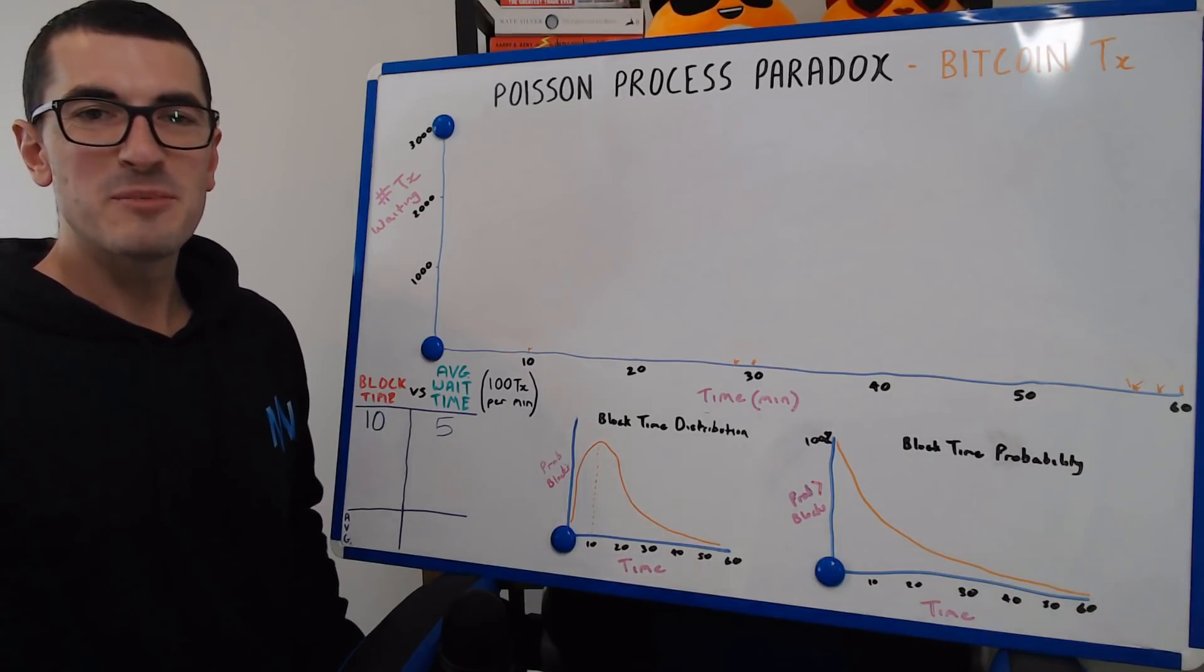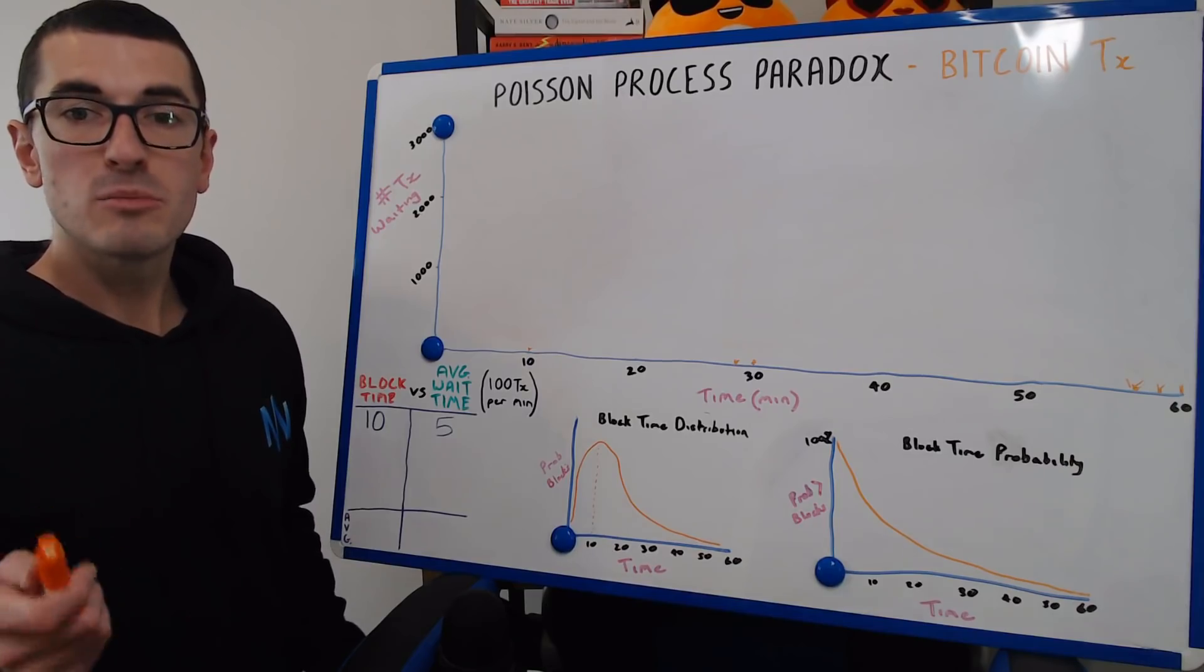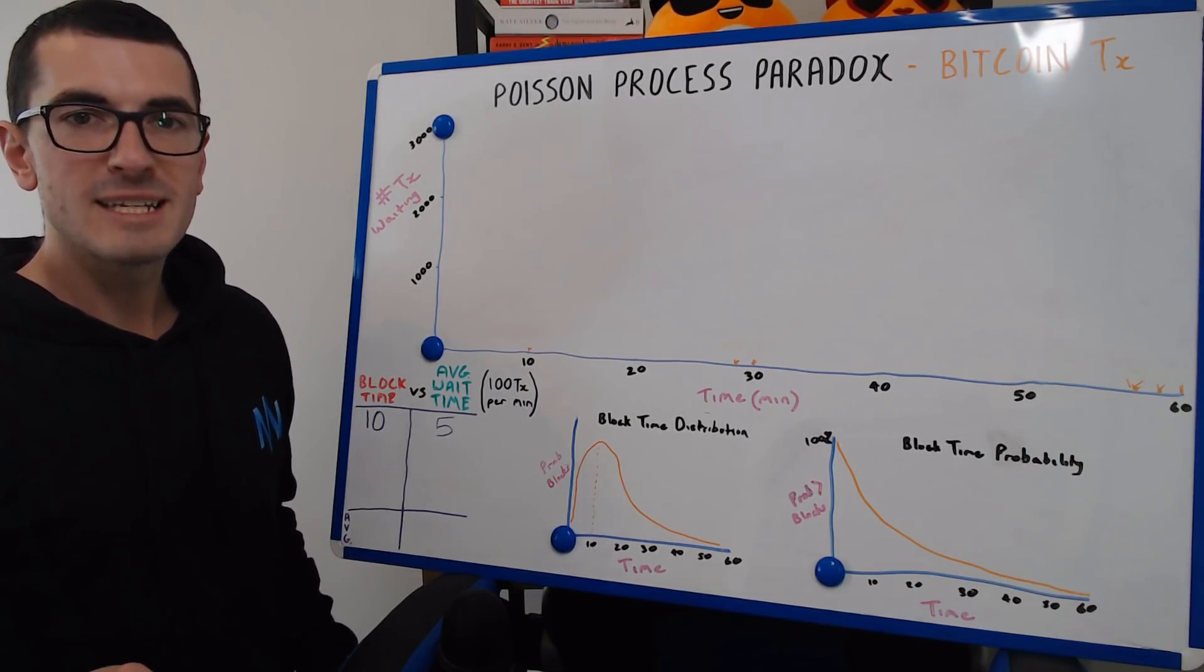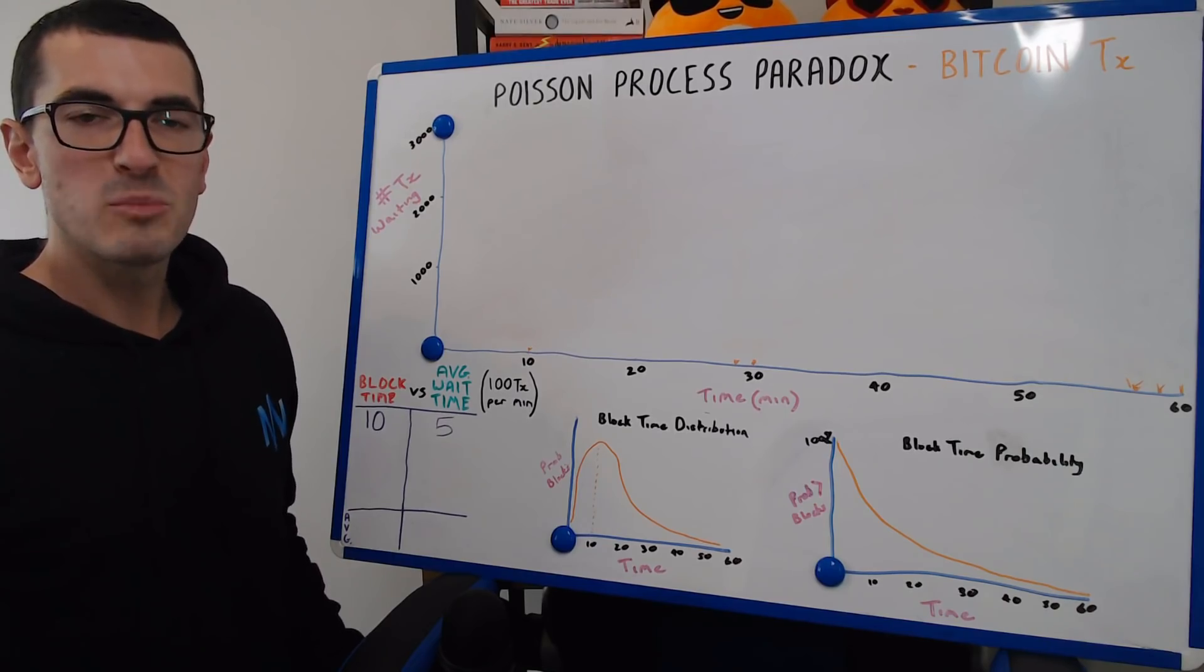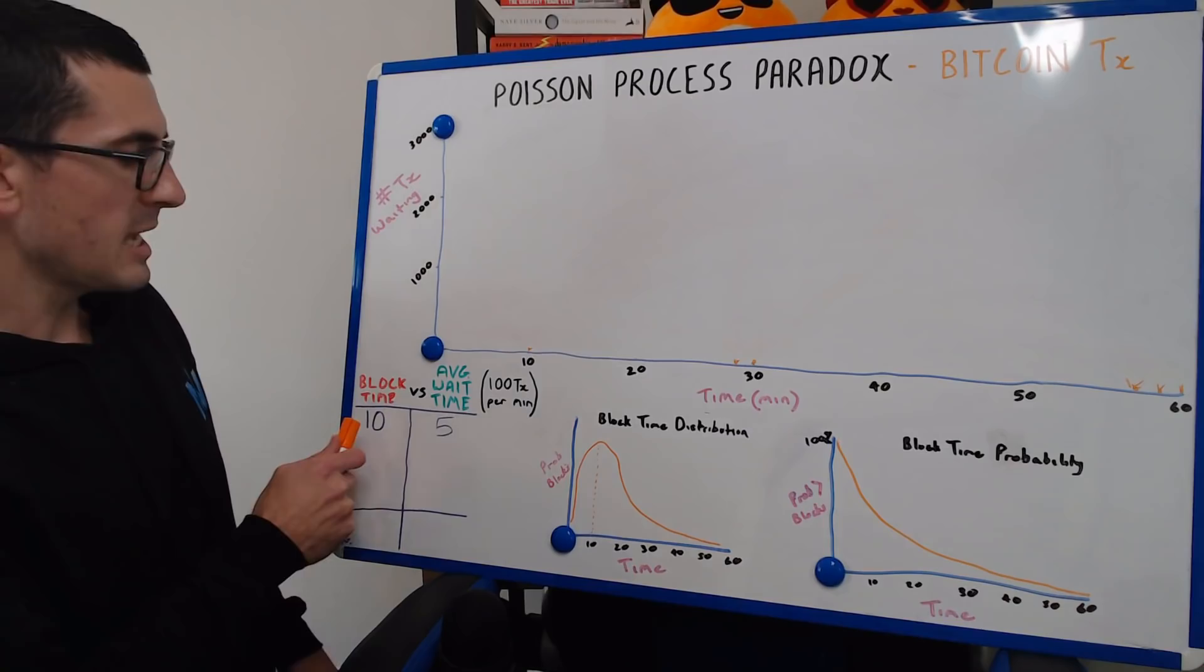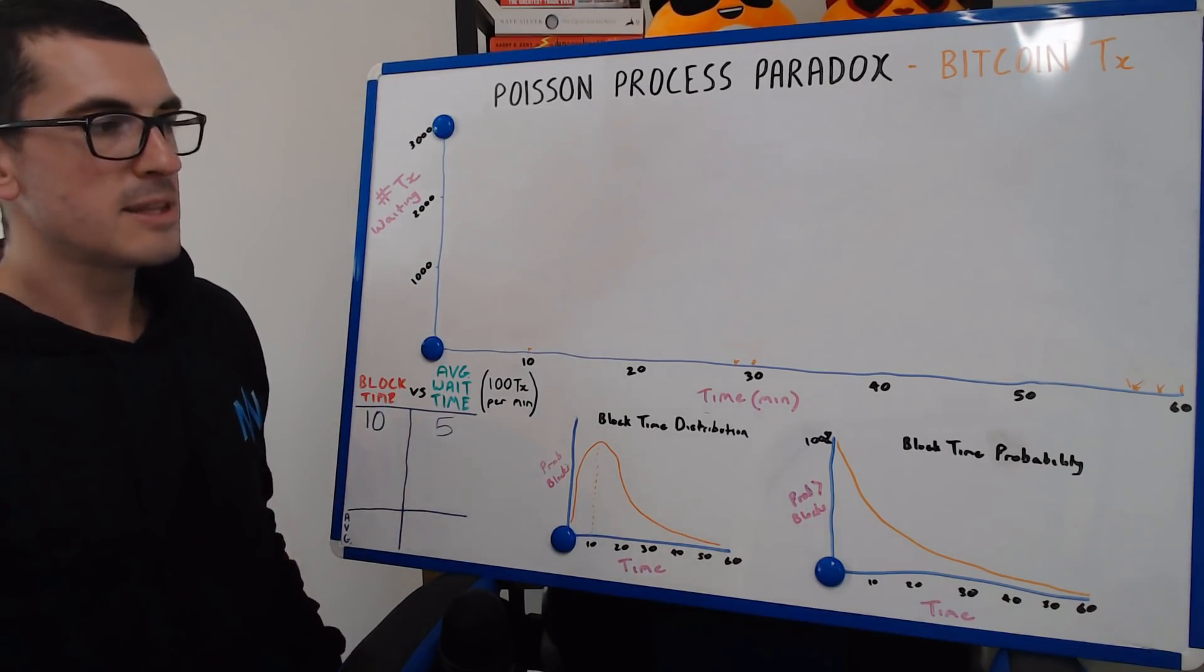Hi guys, thanks for tuning in to another episode of Nuggets News. Well, we're back to the whiteboard today to discuss the Poisson Process Paradox. Why Bitcoin transactions often feel like they take so long to be included in the next block whenever you're waiting, when in theory we know the average block time is 10 minutes, and therefore average wait time should be a lot less than that.